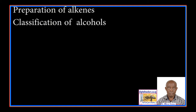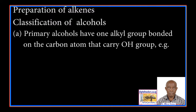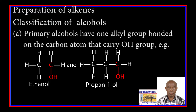Classification of Alcohols. Alcohols are classified according to the number of alkyl groups that are bonded to the carbon atom that carries the hydroxyl group. Primary alcohols have one alkyl group bonded to the carbon atom that carries the OH group. For example, ethanol and propan-1-ol.